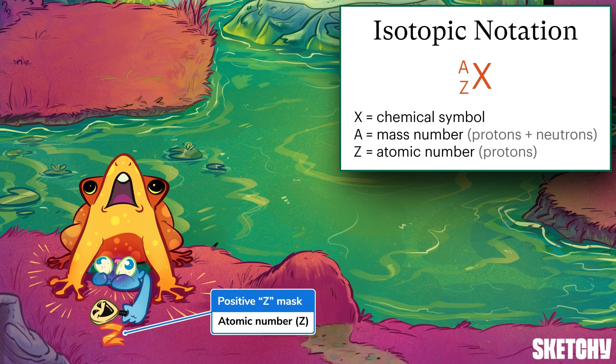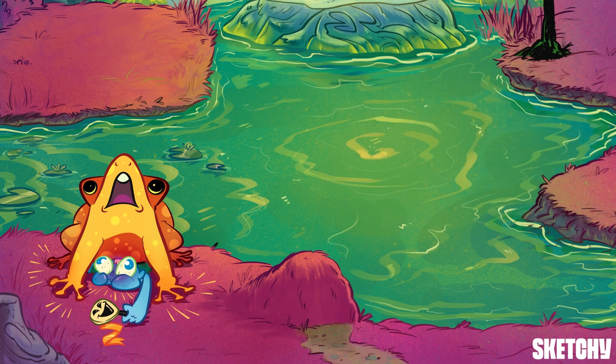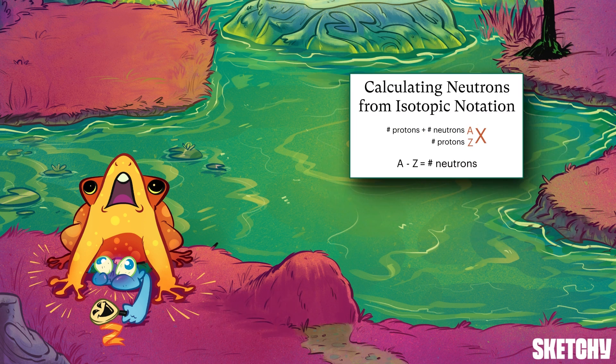The atomic number, Z, is written under the mass number, which is why there's a mask with a Z-shaped ribbon underneath that hefty hopper. That mask is looking pretty positive because the atomic number is the total number of positive particles, or protons, in the atom's nucleus. Knowing these two values allows you to calculate the number of neutrons in the isotope by subtracting Z, the number of protons, from A, the number of protons and neutrons.